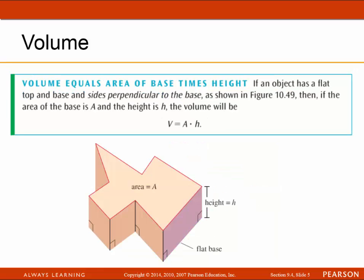Volume equals the area of the base times the height. If an object has a flat top and a base with sides perpendicular to the base, as shown in the image, and the area of the base is A and the height is H, then the volume will be A times H.